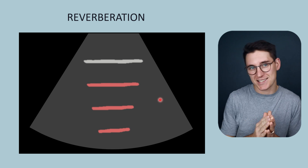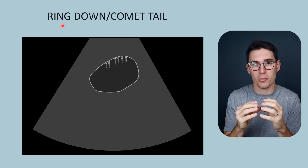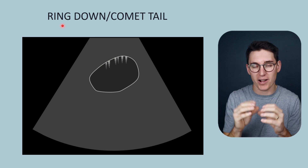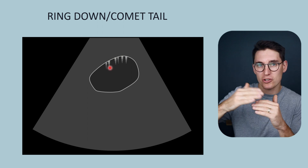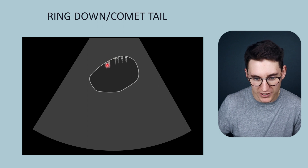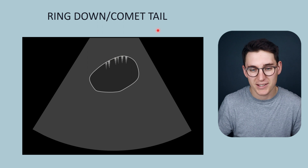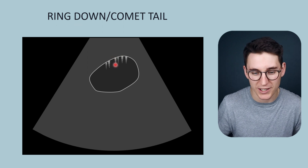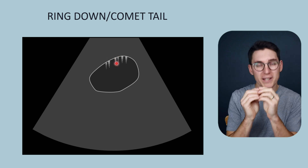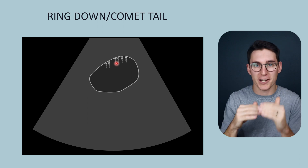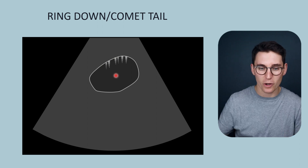The reverberation artifact has a close cousin known as the ring down or comet tail artifact. The ring down artifact occurs when there is fluid between a conglomerate of micro bubbles. When ultrasound interacts with the air around that fluid, the fluid resonates at a set frequency, sending off echoes towards the transducer — giving this ring down effect as an artifact rather than true anatomy. The comet tail artifact looks very similar and is a type of reverberation between two small highly reflective surfaces, such as small pieces of calcium like renal calculi, or metallic objects like surgical clips.